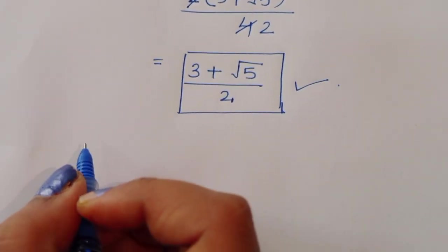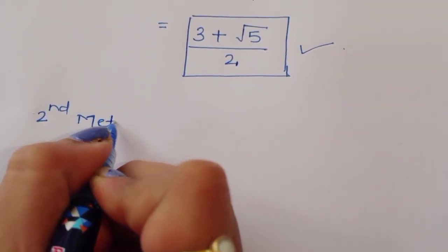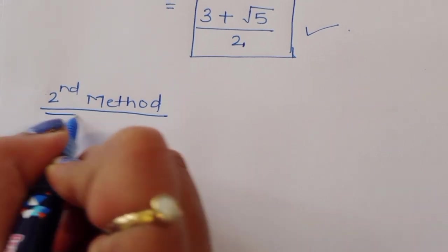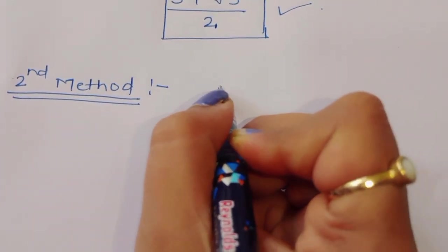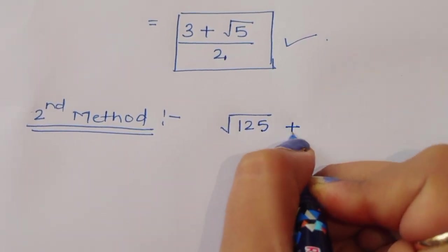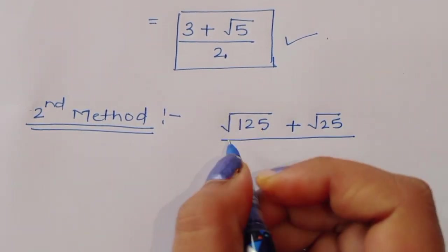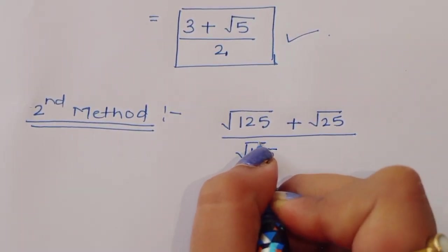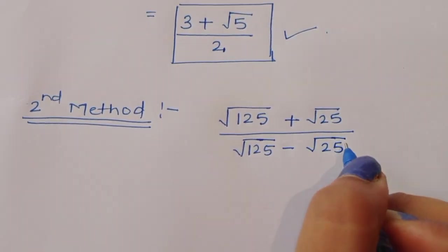Now we are using the second method. The question is square root of 125 plus square root of 25, divided by square root of 125 minus square root of 25.